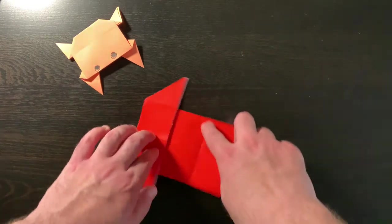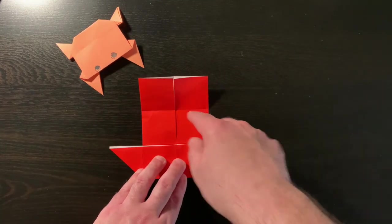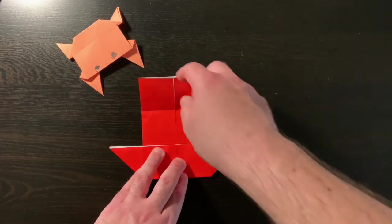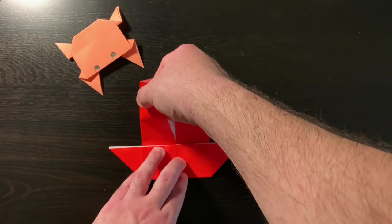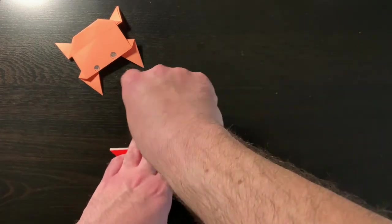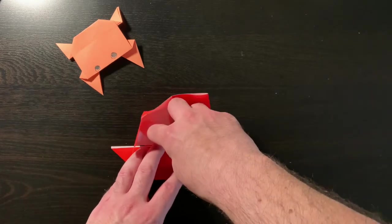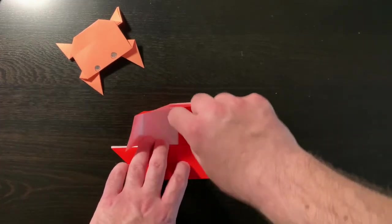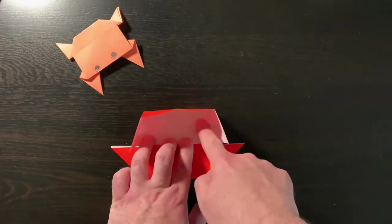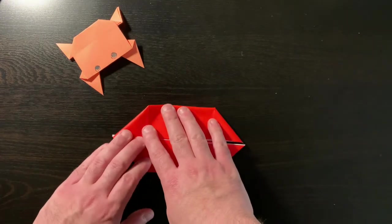And we have to do the same thing down here. I'm going to turn it around so you can see it. These need to meet this edge, so we're making a crease down here. Just like that. We open, make an angle, and push our page down.